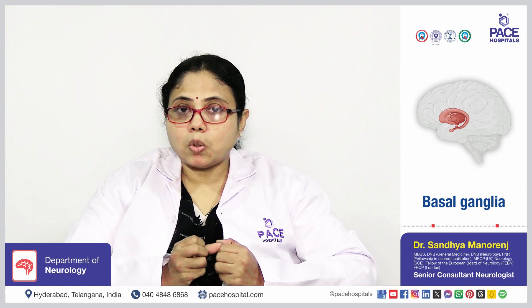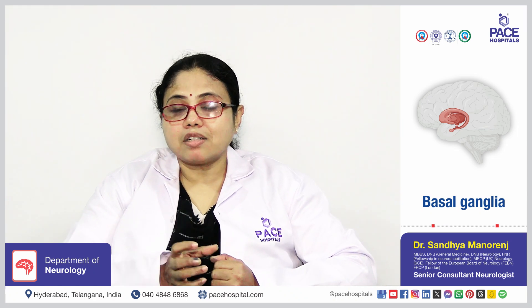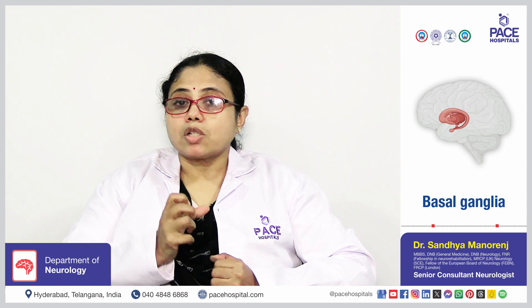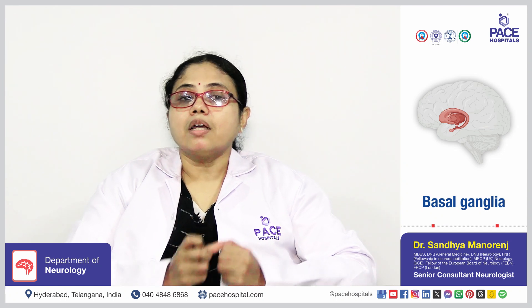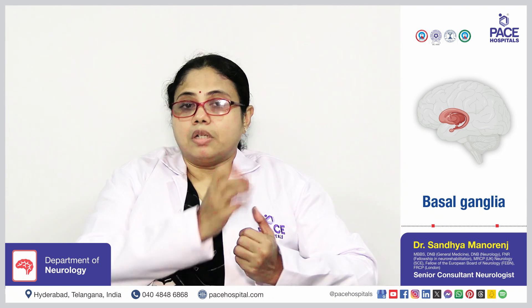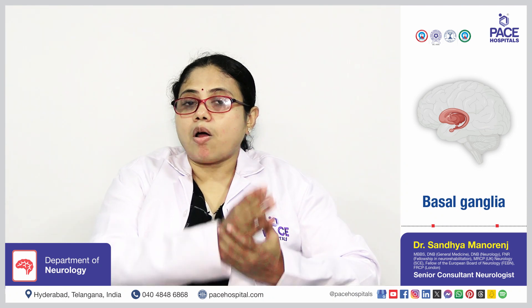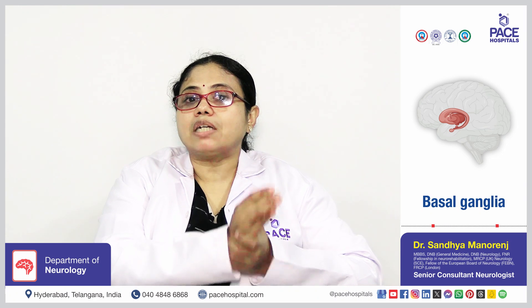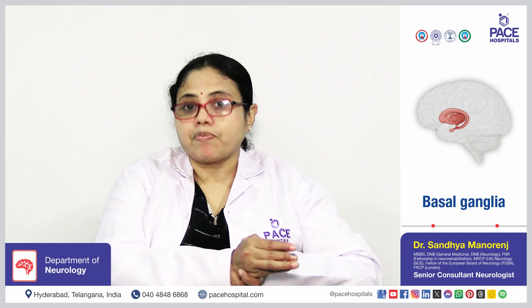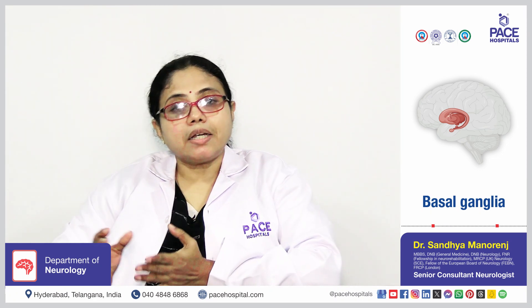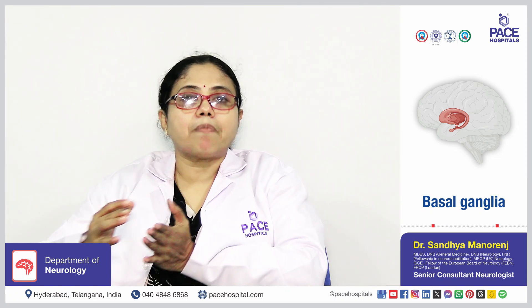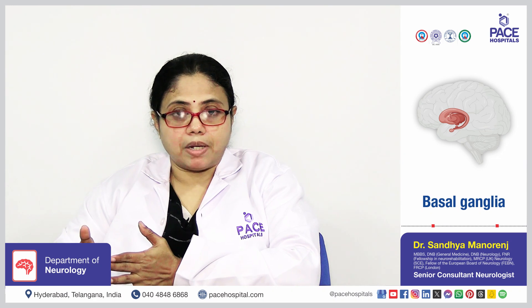For example, as in Parkinson's disease, slowness occurs due to abnormal function of the direct pathway. Hyperkinetic movements occur due to involvement of the indirect pathway.